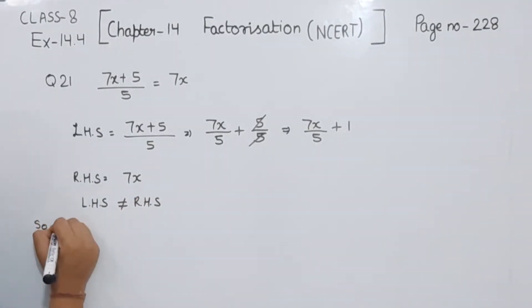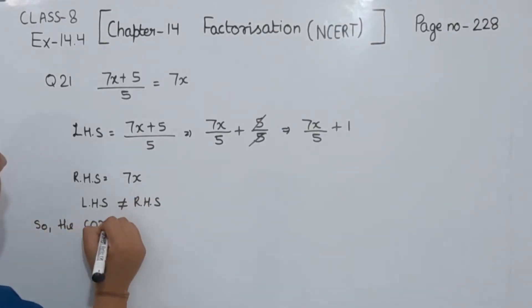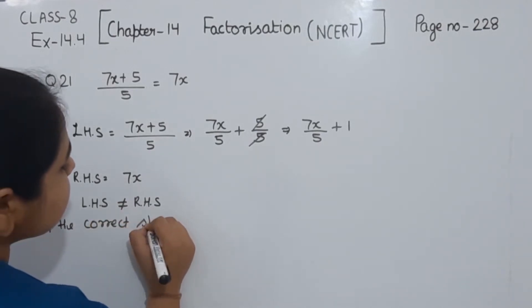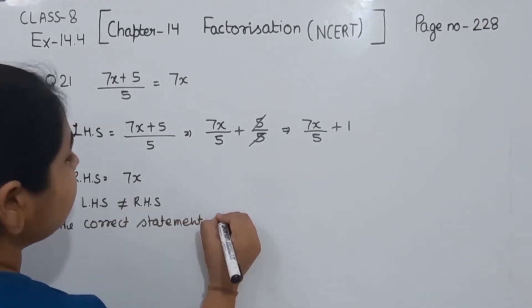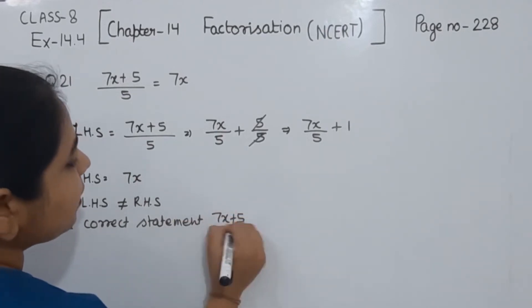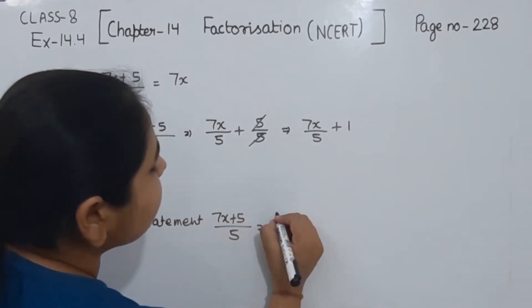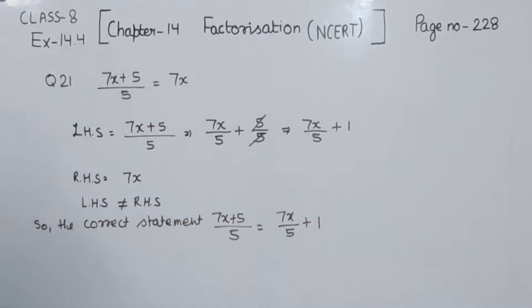Now we have to find the correct statement. The correct statement is (7x + 5) divided by 5 equals 7x by 5 plus 1. So this is the correct statement.